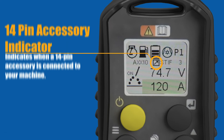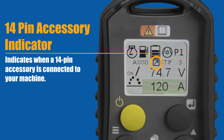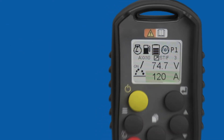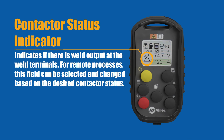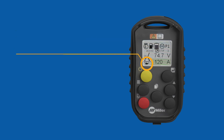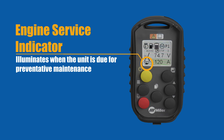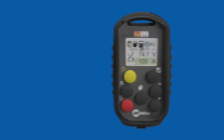14-pin accessory indicator: this field lets you know when a 14-pin accessory is connected to your machine. Contact or status indicator: this field indicates if there is output at the weld terminals. For remote processes, this field can be selected and changed based on the desired contact or status. Finally, the engine service indicator illuminates when the unit is due for preventative maintenance.